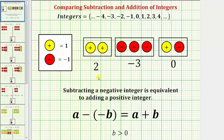Every subtraction problem has an equivalent addition problem. When subtracting integers, subtracting an integer is equivalent to adding the opposite. In this lesson, we will focus on showing that subtracting a negative integer is equivalent to adding a positive integer, or a minus negative b equals a plus b. In another lesson, we show that a minus b equals a plus negative b.